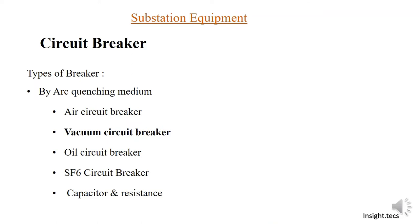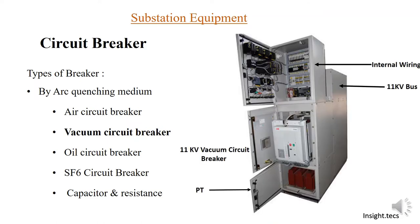The next type is the vacuum circuit breaker. Vacuum circuit breakers use vacuum as an arc quenching medium. This type of vacuum circuit breaker is normally an indoor circuit breaker used in 11 kV panels and can also be used up to 33 kV.